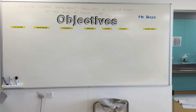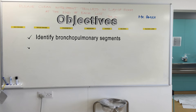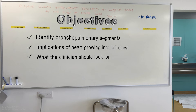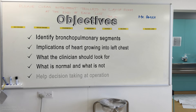The objective of this video is to show you in an easy and logical way how to identify the bronchopulmonary segmental divisions at bronchoscopy. In addition, the aim is to explain the implications of the heart growing into the left chest, showing what the operator should look for — what is normal and what is abnormal — to help decision-making in the operative and perioperative period.